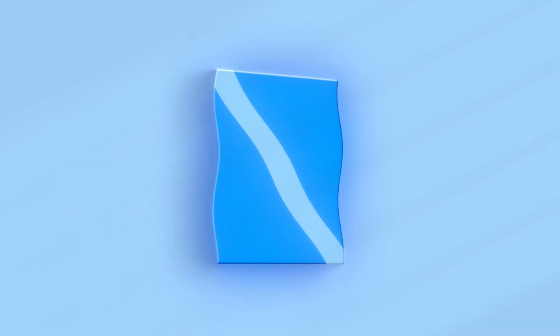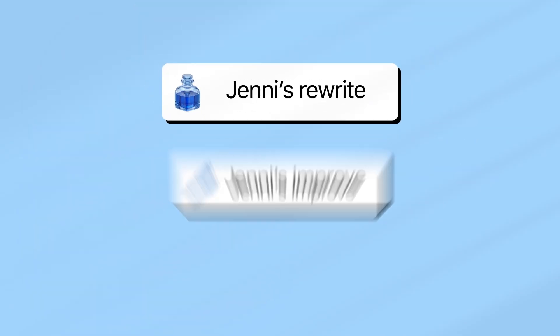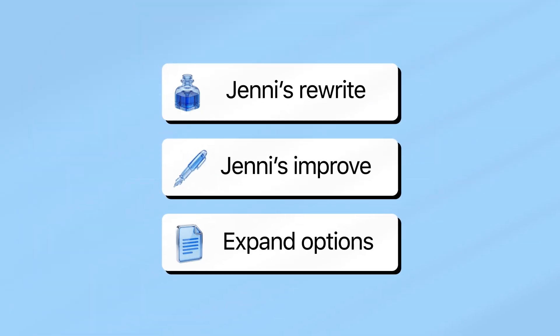Now that we have a full first draft, we're not just going to leave it as is. The next stage is all about refinement. We're going to go through the proposal section by section and use Jenny AI's tools to make everything clearer, more structured, and more academic. Here, we will be using Jenny's rewrite, improve, and expand options to clean up wording,